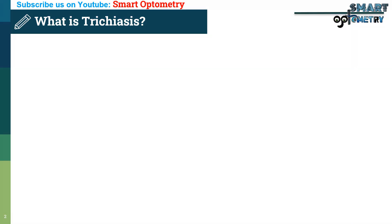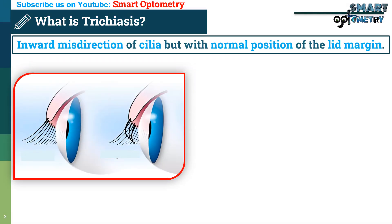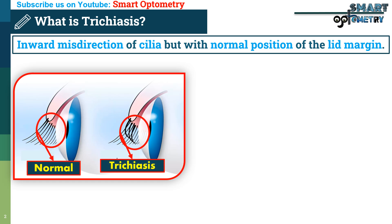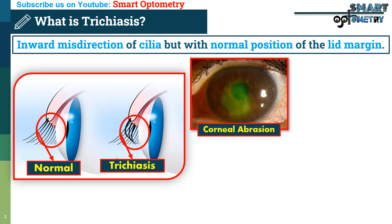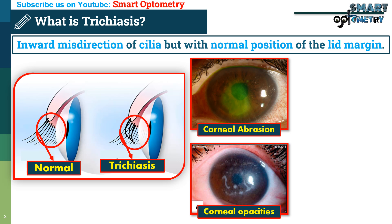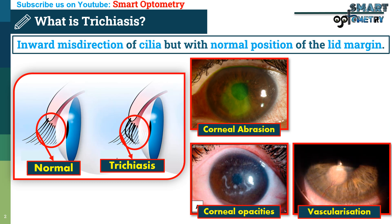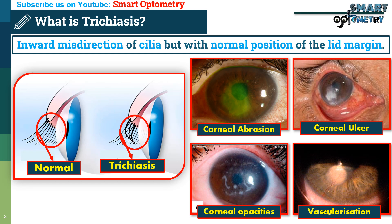Trichiasis refers to inward misdirection of cilia, but with normal position of the lid margin. In trichiasis, the position of the eyelid margin will be normal, but cilia or eyelashes will be misdirected against the cornea, causing irritation and corneal complications like recurrent corneal abrasions, superficial corneal opacities, corneal vascularization, and non-healing corneal ulcer.